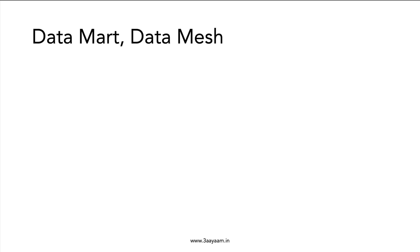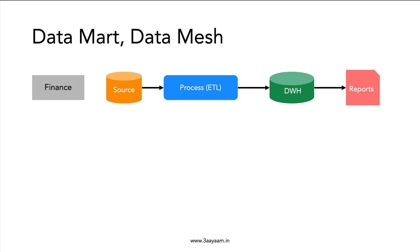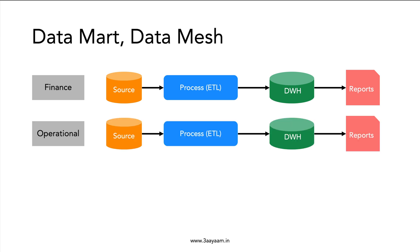What is a Data Mesh? Let's look at the pipeline again. We have the finance department with source systems, a processing layer, a data warehouse, and then reports. This entire pipeline from source systems to the target data warehouse and reports is called a Data Mesh for the finance department. For the operational department, we might have a different pipeline with the same or different source systems, the same or different processing layer, and a different data warehousing system with different reports. So this entire pipeline is called a Data Mesh for the operational department.